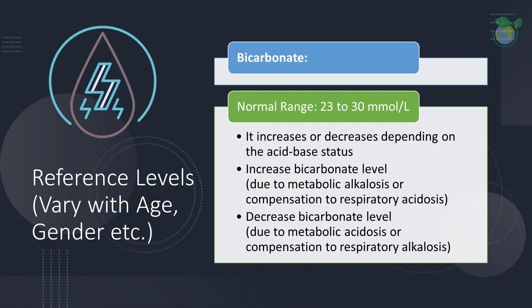Next up, bicarbonate serves as an important acid-base buffering system within the blood and body fluids. Its normal range is 23 to 30 mmol/L, and the level depends on the body's acid-base status. Bicarbonate, also known as HCO3, is a by-product of your body's metabolism. Your blood brings bicarbonate to your lungs, and then it is exhaled as carbon dioxide. Your kidneys also help regulate bicarbonate — it is excreted and reabsorbed by your kidneys, which regulates your body's pH or acid balance.